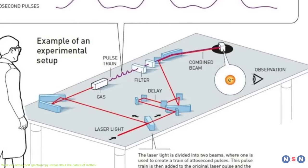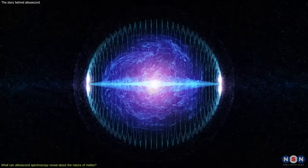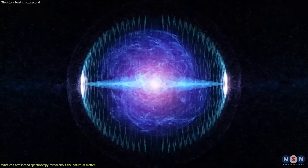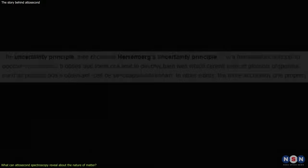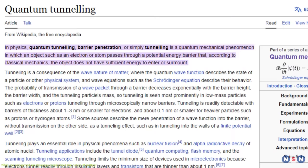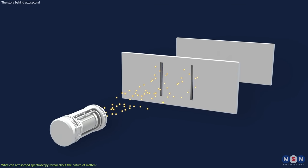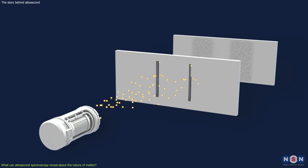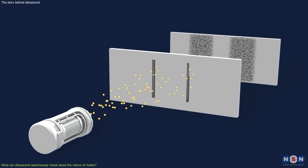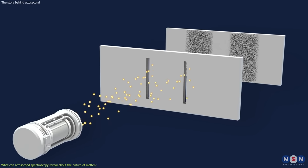Attosecond spectroscopy can also shed light on some of the open questions and challenges in quantum mechanics, such as the measurement problem, the uncertainty principle, and the tunneling effect. The measurement problem is how to explain why quantum systems collapse into definite states when they are observed and what constitutes an observation in the first place.